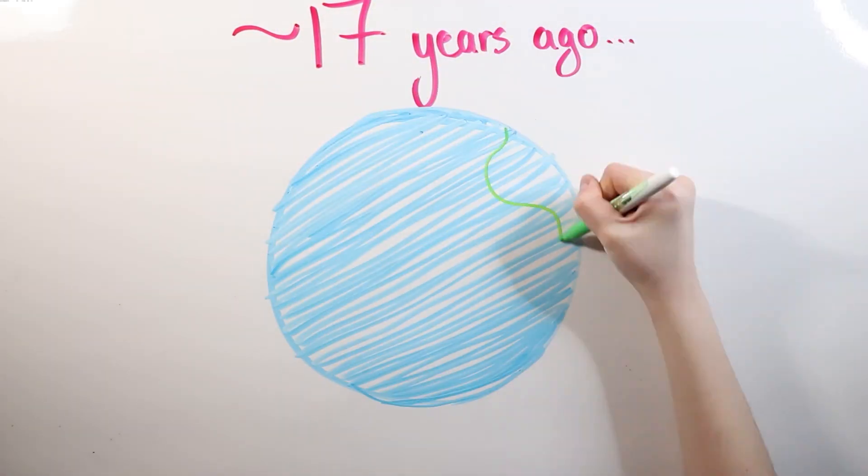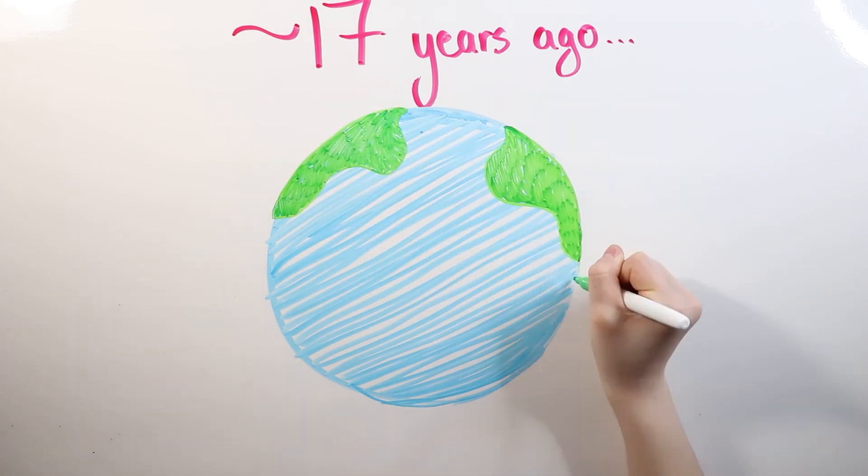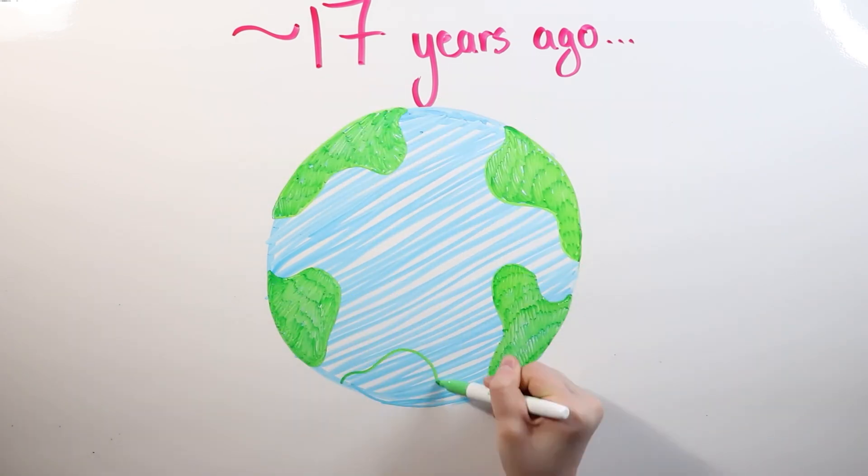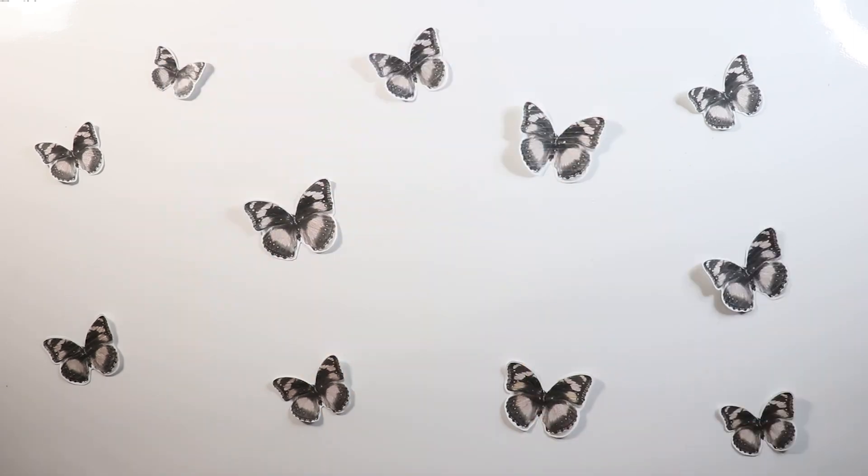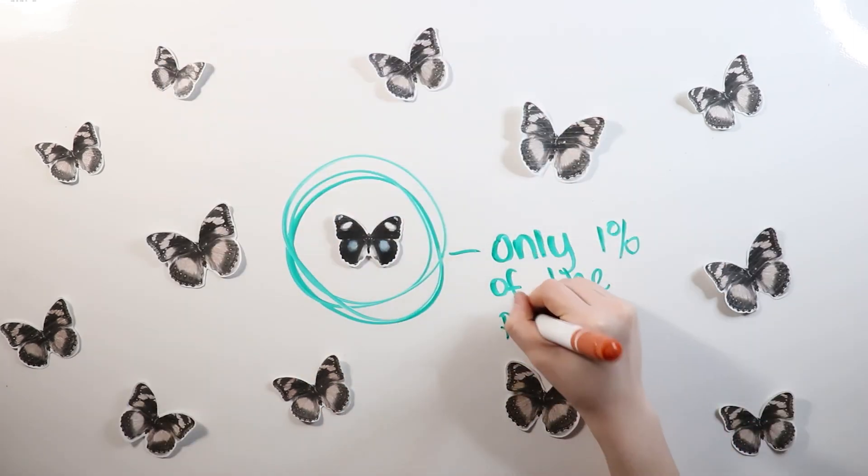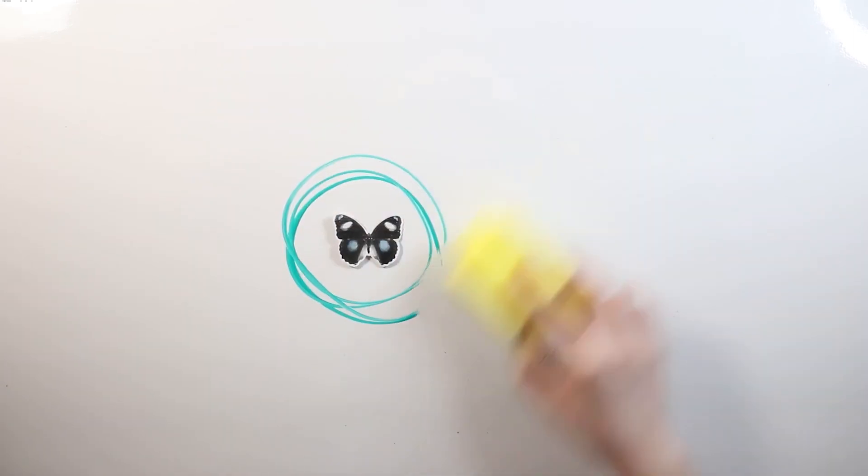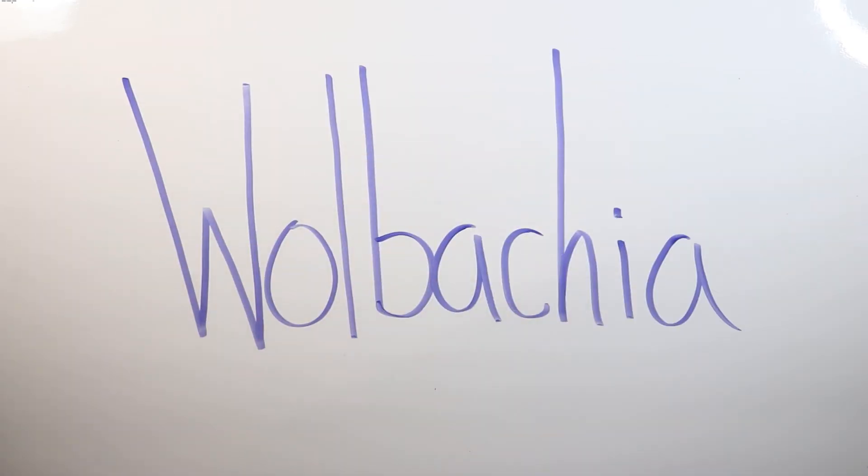About 17 years ago, a surprising discovery was uncovered by two scientists in 2001 who were studying these stunning insects on the Samoan islands of Savai and Ofulu. They found out that the male blue moon butterfly population made up only just 1% of the entire species. But what was the cause of this gender imbalance?